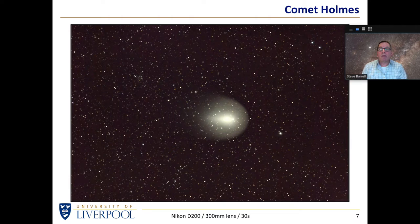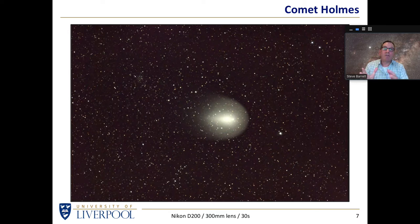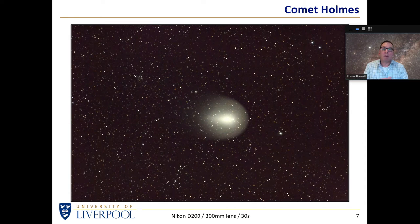There are other images that can be taken without worrying about the rotation of the Earth. For instance, Comet Holmes visited us about 15 years ago and was large enough that a telephoto lens on a camera was sufficient — no telescope needed. Because it was a relatively bright comet, exposure could be relatively short, about 30 seconds, so again a static camera on a static tripod works fine. As long as the object is bright, we can get nice images without worrying about equatorial mounts and tracking.